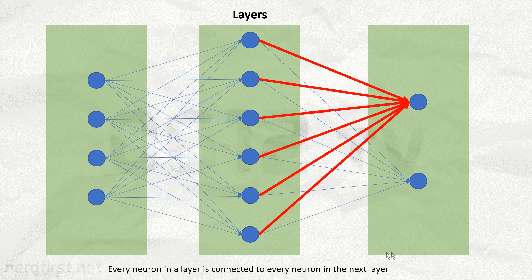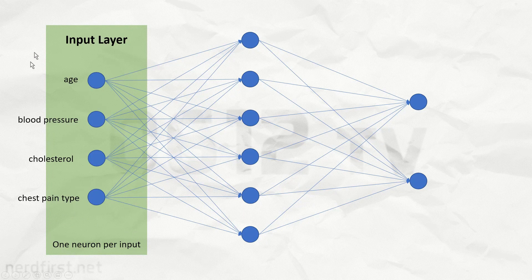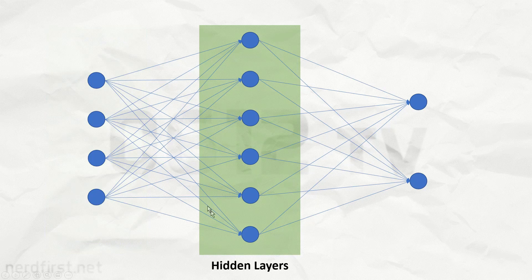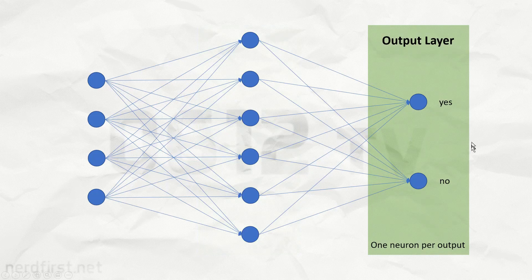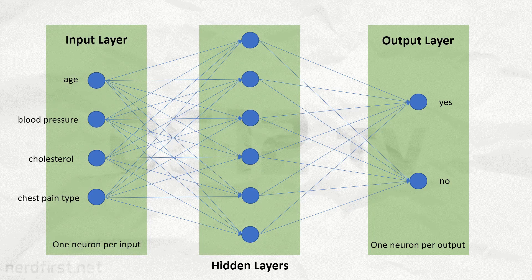The layers themselves serve different purposes. We start off with the input layer on the left — every one of these neurons is being fed by one of the input columns in our dataset. We can have any number of layers in the middle, known as hidden layers. The number of nodes on each layer and the number of layers you use are all decided by you — the person creating the neural network. Finally, on the right side we have our output layer, with one neuron per output. In the case of heart disease, since there are only two responses, yes or no, we'll only have two output neurons.